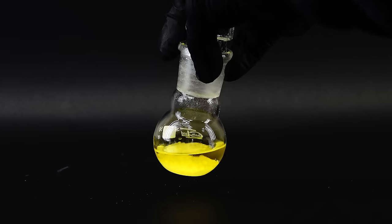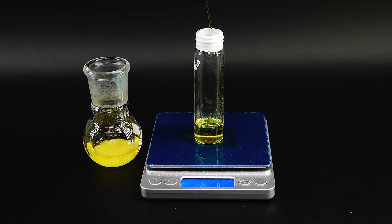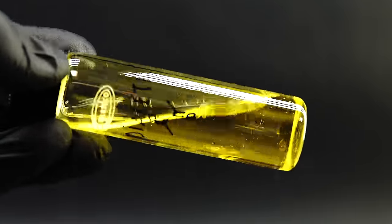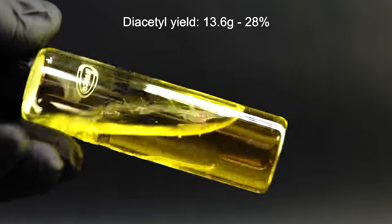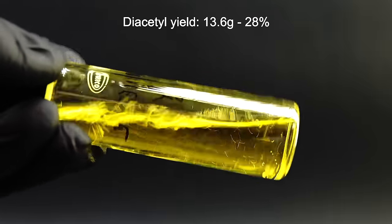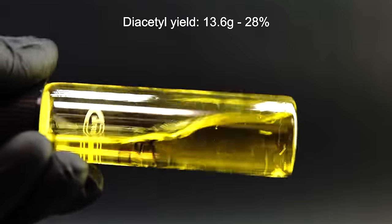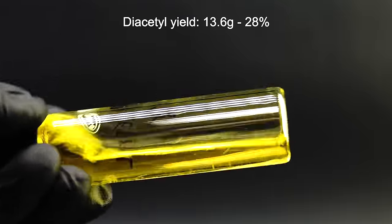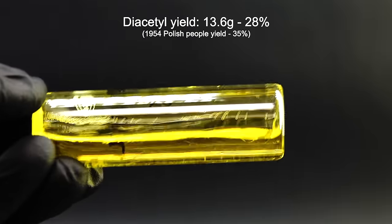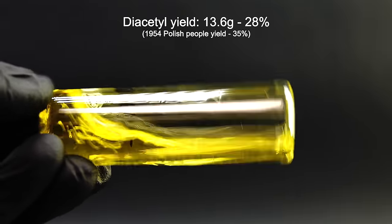After all this it should be bone dry, and to store it I transferred it all into a vial. When it comes to the yield I managed to make 13.6 grams of some nice and yellow diacetyl. This corresponds to a total yield of around 28% which is honestly kind of trash, but it's quite similar to what they achieved in the book, so I am pretty happy I managed to successfully reproduce such an ancient procedure.